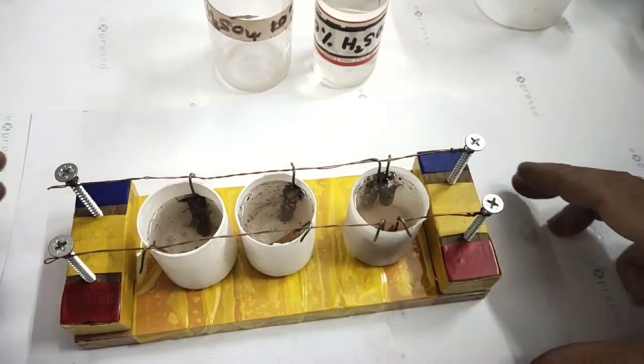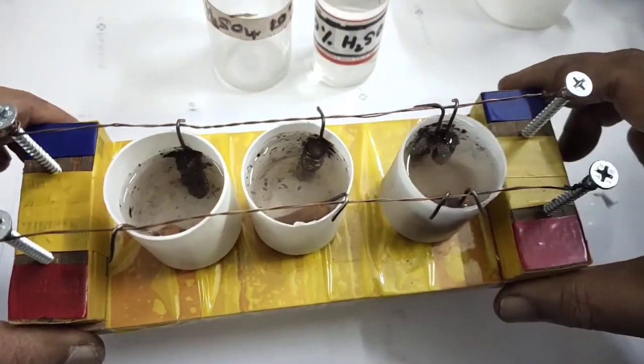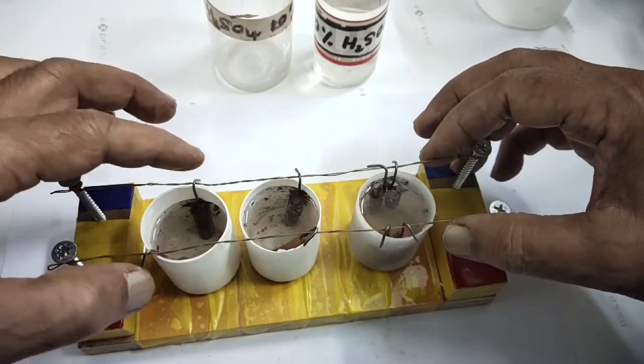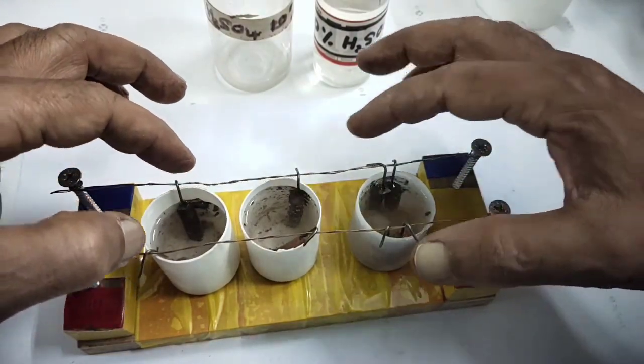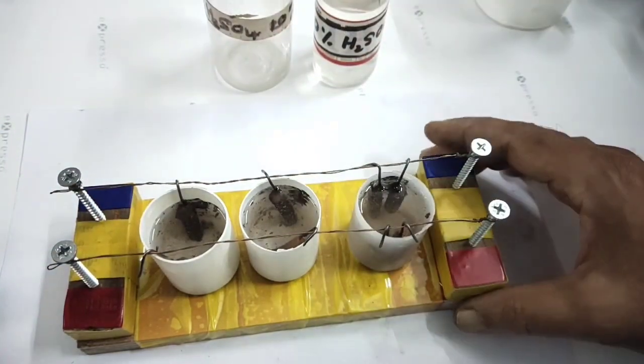You can see a lot of bubbles coming out. These are all early stage. Let this be in soaking stage for 45 minutes.